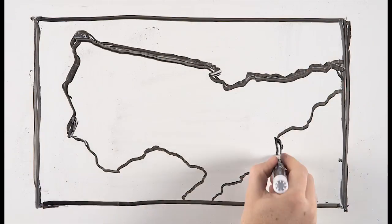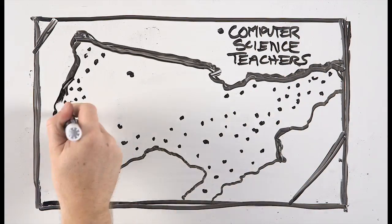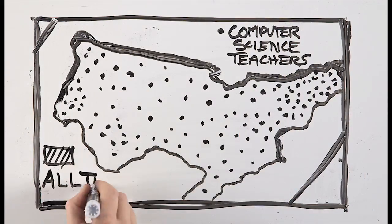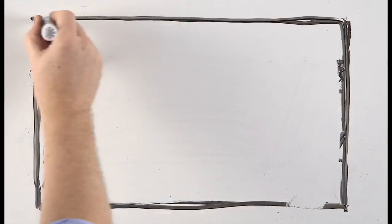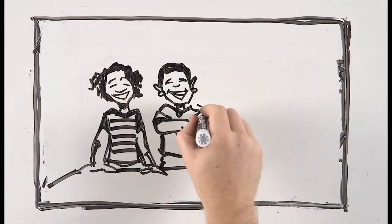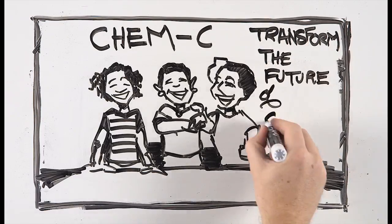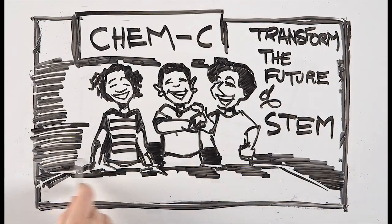Importantly, integrating computational thinking is a social justice issue because it touches all children, not just the ones that take computer science. Our Chem C project investigates how to teach all students to think this way. This integrated approach can transform the future of STEM education and impact the lives and thought processes of the next generation.